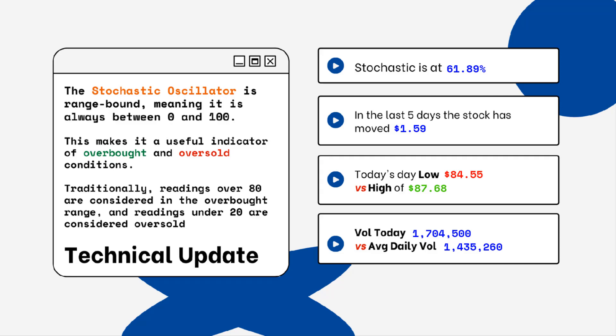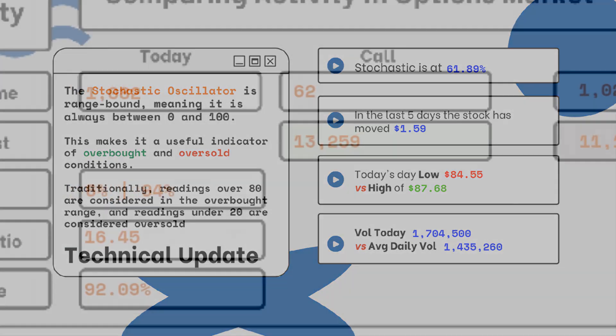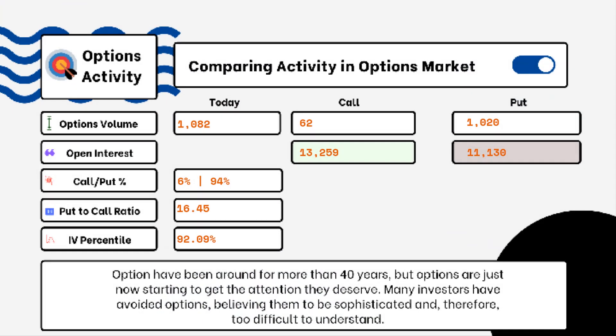We've provided details on today's option activity. What you'll be able to see here is options volume, open interest, implied volatility, put-to-call ratio, and IV percentile. One of the most popular indicators for traders is the put-to-call ratio. When looking at put-to-call ratios, if we see anything above one, that is telling us there is more bearish sentiment in the market rather than bullish.